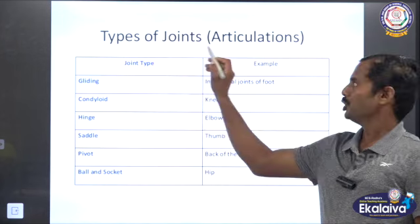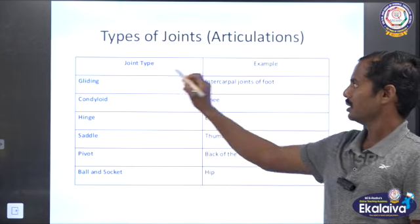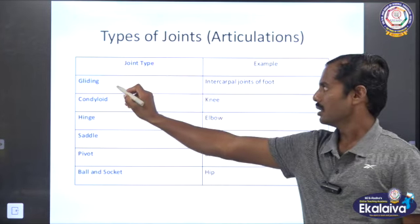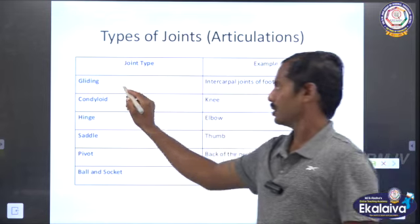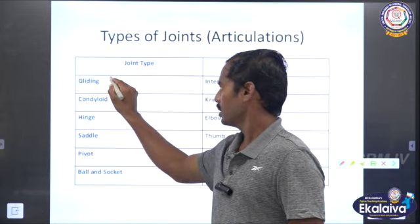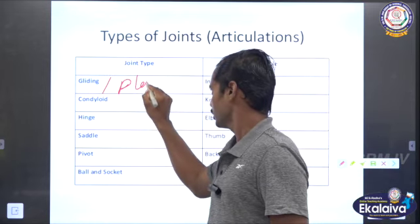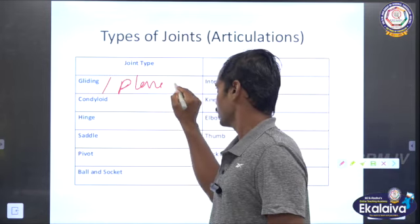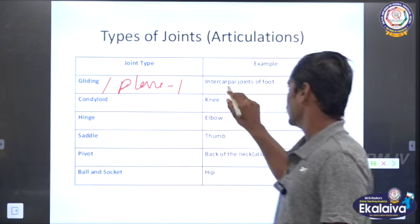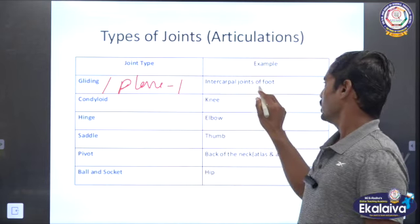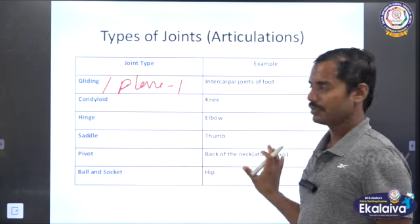Types of joint articulation. Number one: gliding joint or plane joint. Example: inter-corporal joint of the foot.